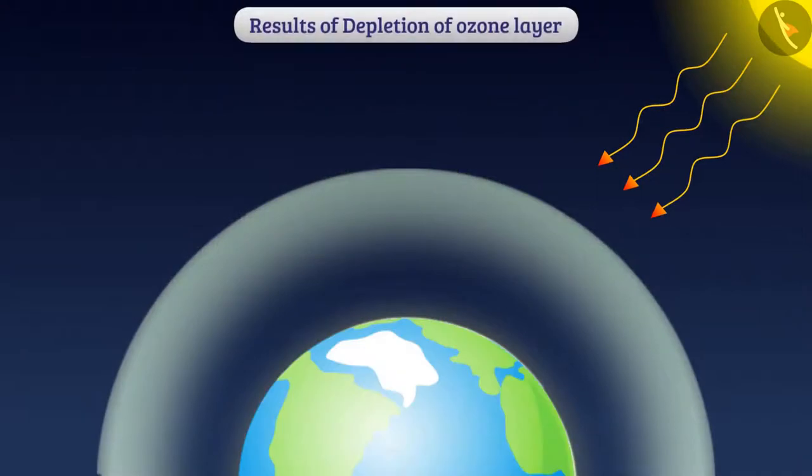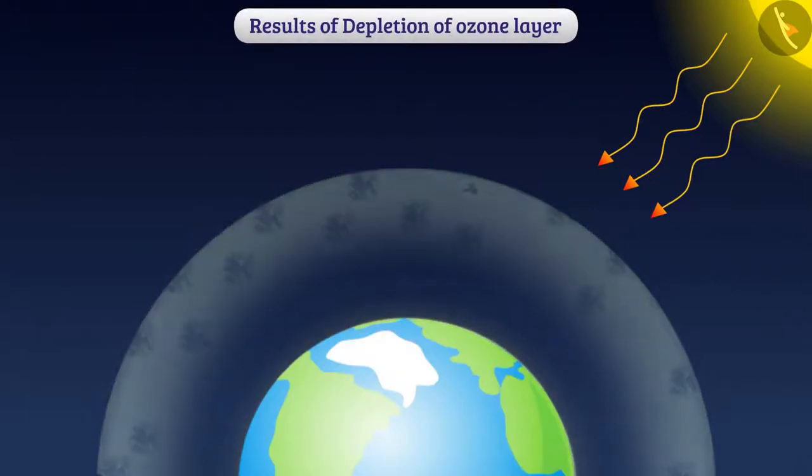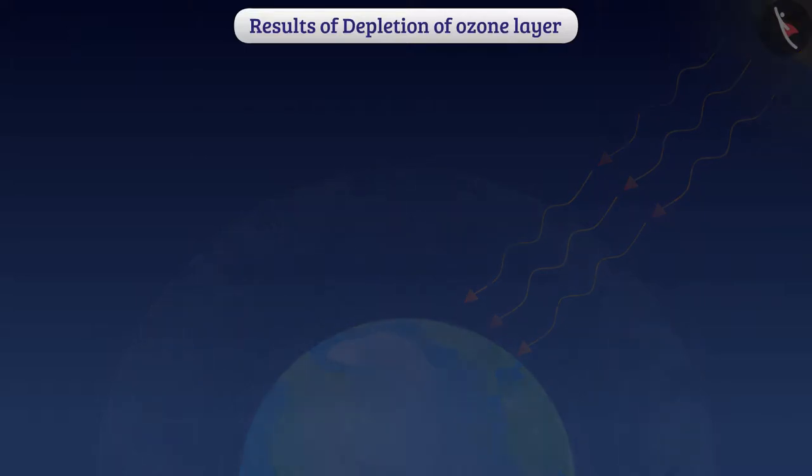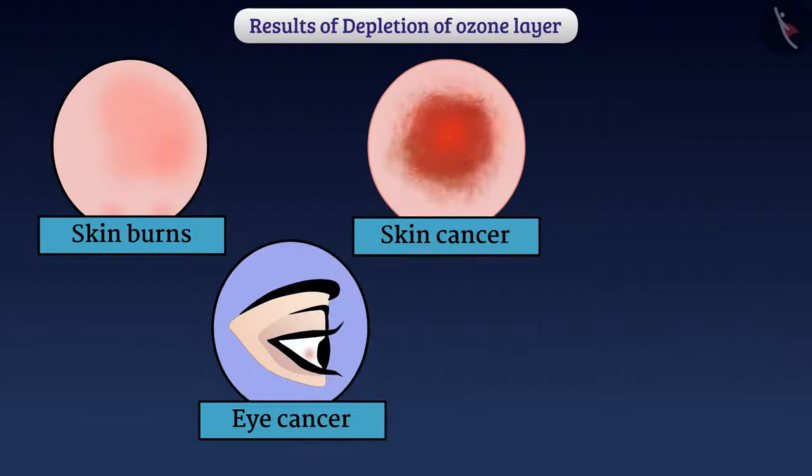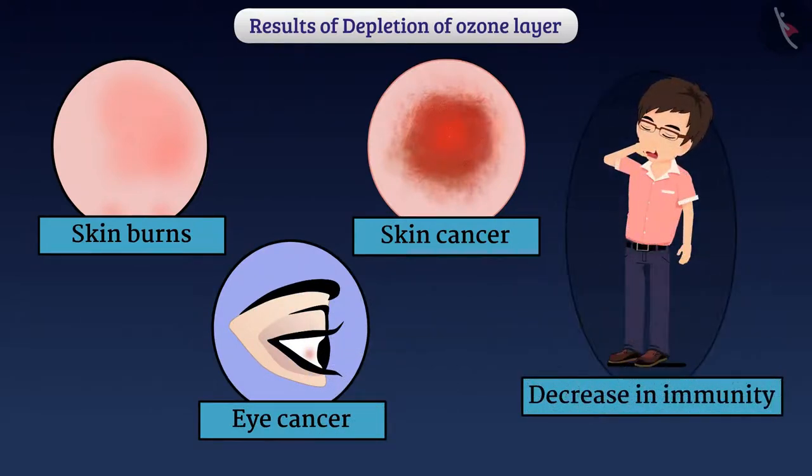If the ozone layer becomes too thin, then the sun's ultraviolet radiation will come into direct contact with organisms and cause serious problems such as skin burns, skin cancer, eye cancer, decrease in immunity, etc.